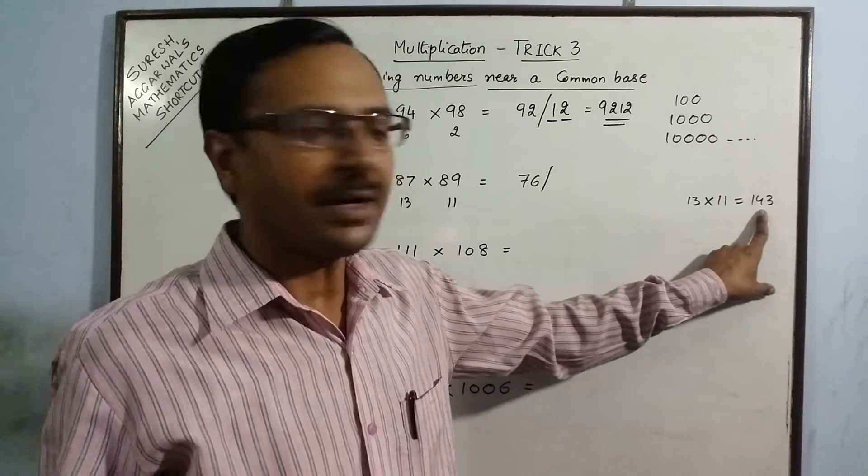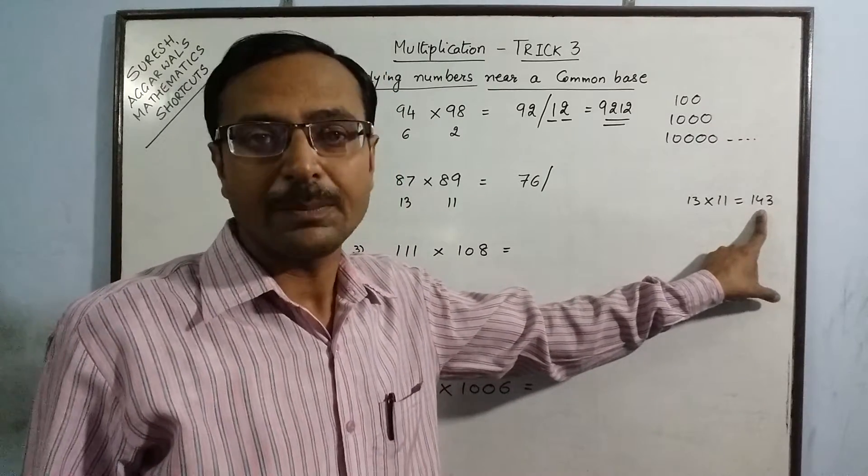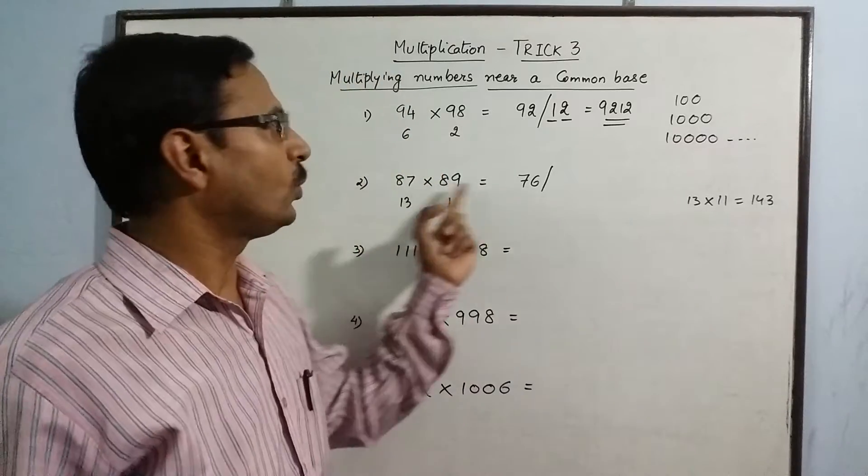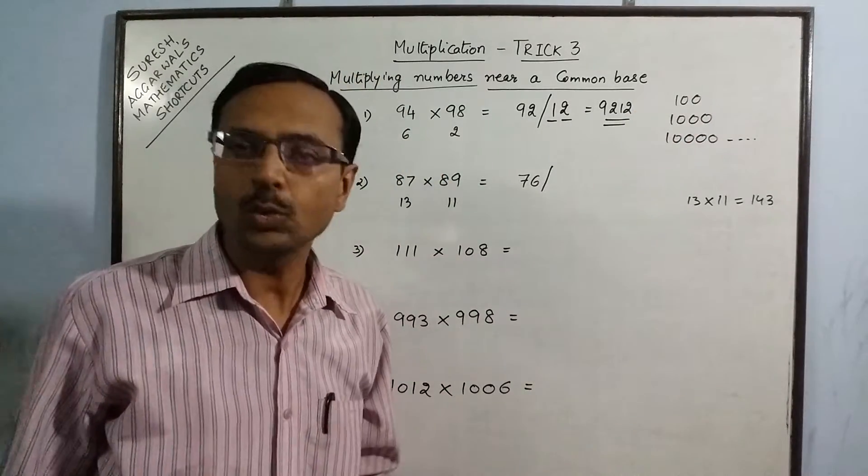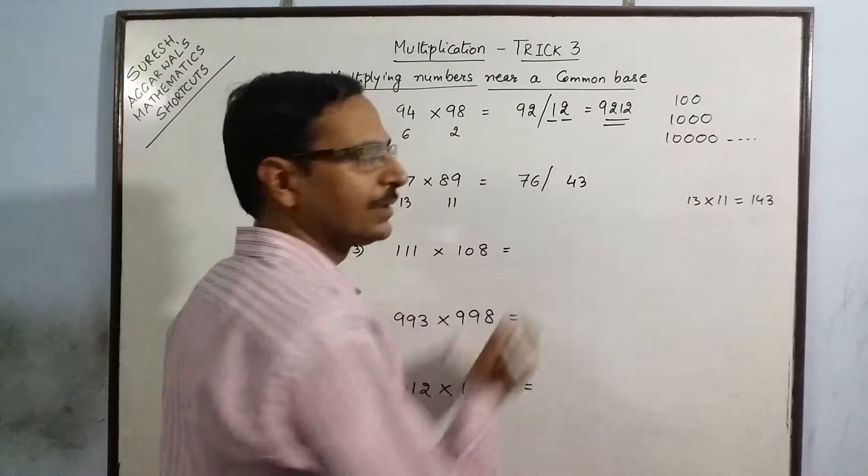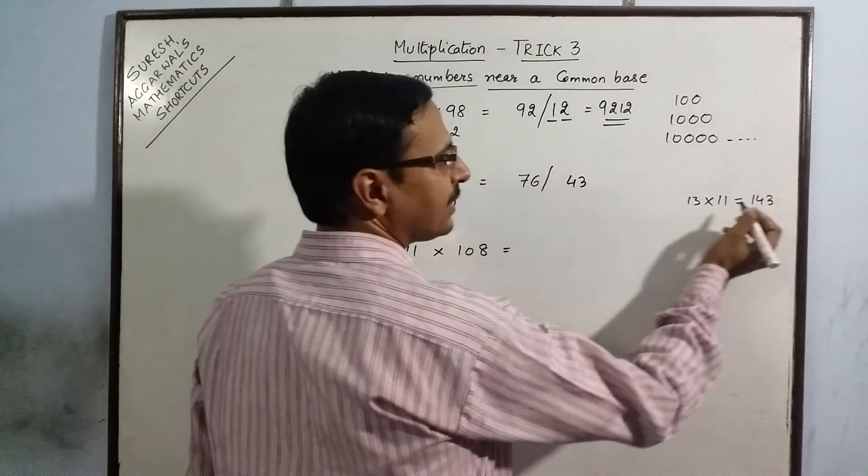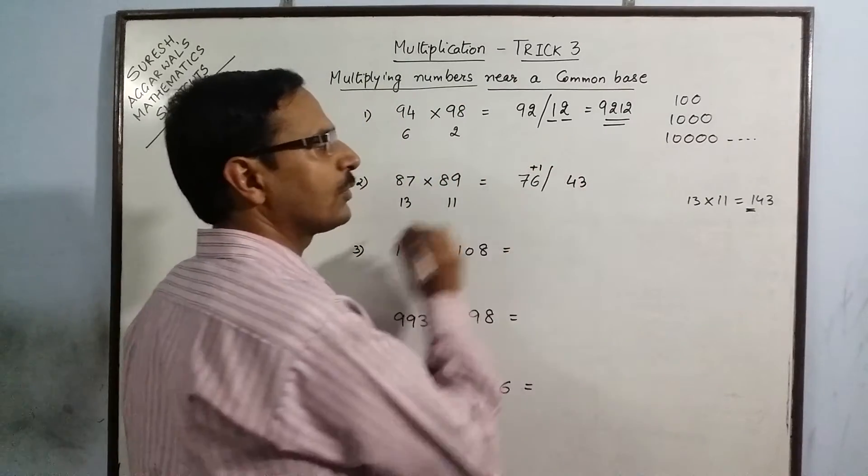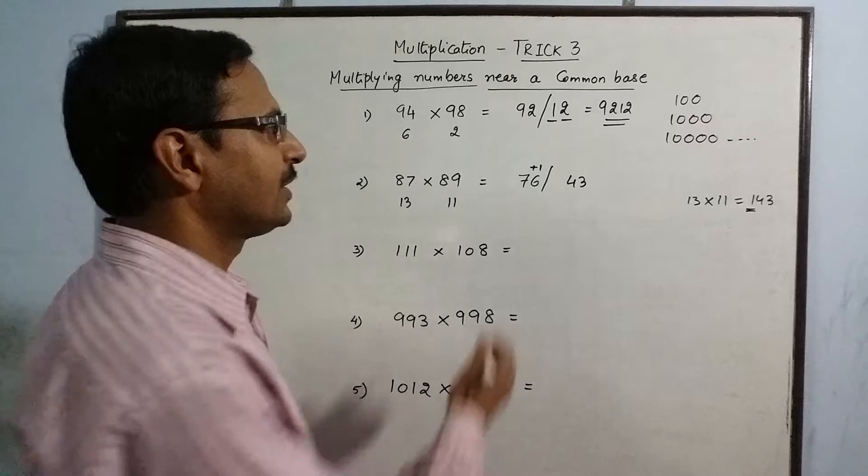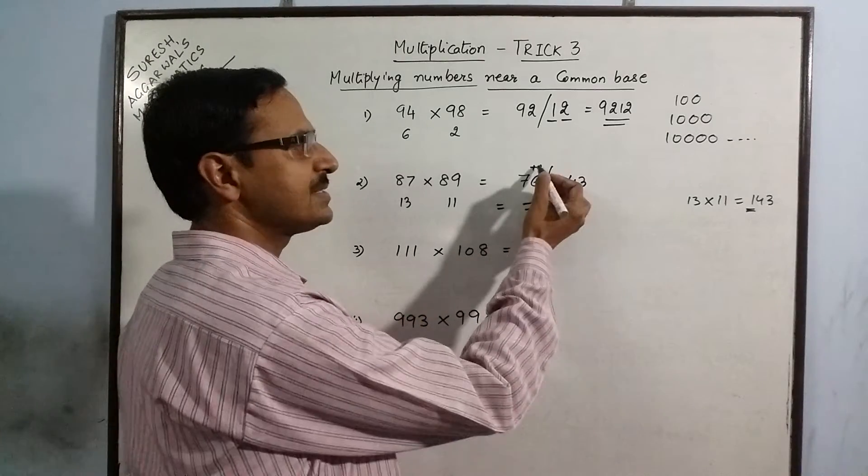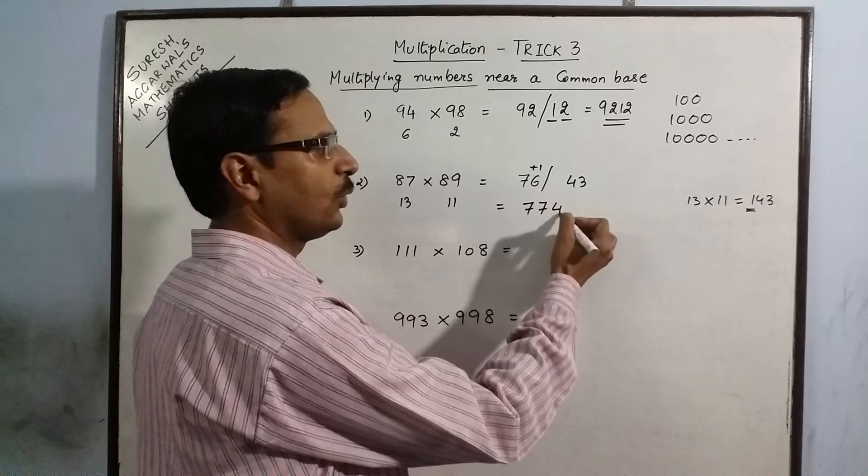Now, the second part contains 143, that means it is having three digits, but the base 100 is having only two zeros. So, we can retain only 4 and 3, whereas this 1 has to be carried forward to the previous number. That gives us the final answer as 7, 6 plus 1, 7, 4, 3.